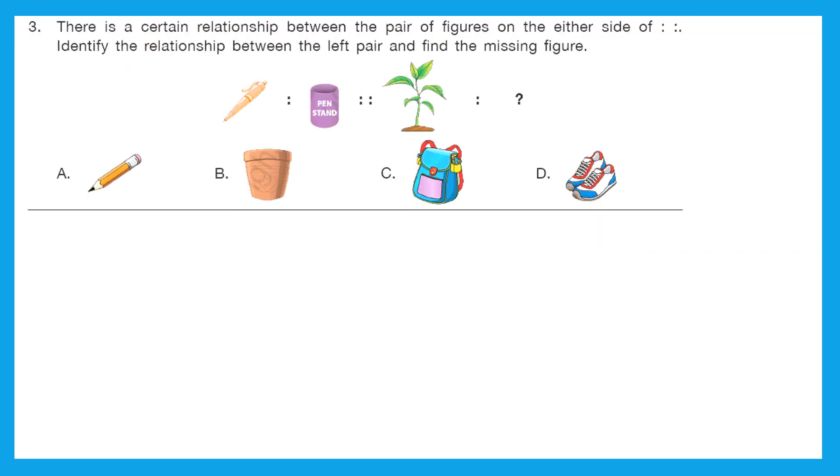Question 3: There is a certain relationship between the pair of figures on the either side of colon. Identify the relationship between the left pair and find the missing figure. So let's find out the relationship between pen and pen stand. Pen goes inside the pen stand. Now where does a plant go? It goes in a pot, right? And where is the pot? It's option B.